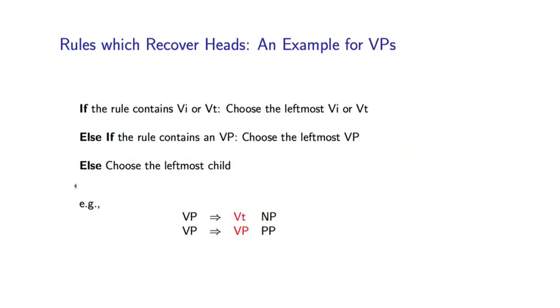Here's a second example. This is an example for verb phrases, specifying a set of rules which recover the heads of verb phrases. And they're rather similar to what I showed you before. The first rule says that if the rule contains an intransitive verb or a transitive verb, choose the leftmost VI or VT. In fact, we'd probably be careful to specify all verb categories here. There might be several different subcategories of verb.